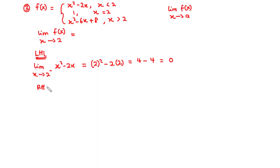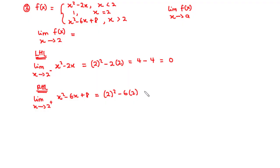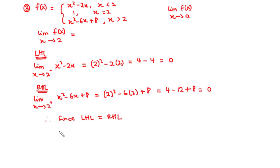For the right-hand limit, values greater than 2 correspond to x squared minus 6x plus 8. Plugging in 2 gives 2 squared minus 6 times 2 plus 8, which is 4 minus 12 plus 8 equals 0. Since the left-hand limit equals the right-hand limit, the general limit of f of x as x approaches 2 exists and equals 0. That's it for today's video. Thanks for watching and see you in the next video.